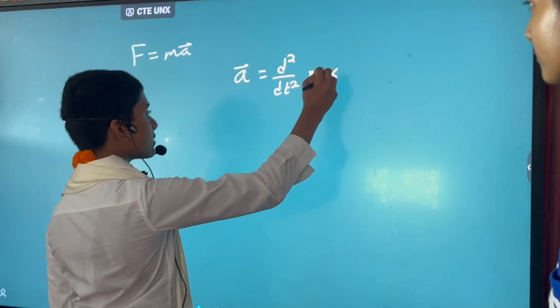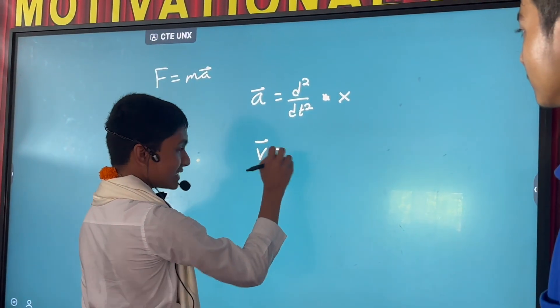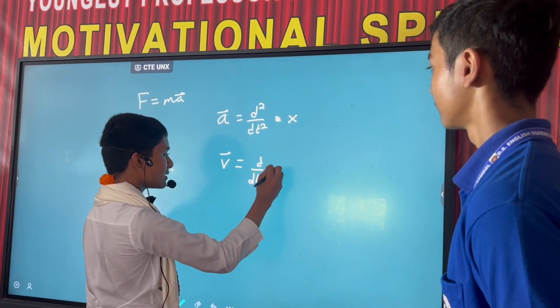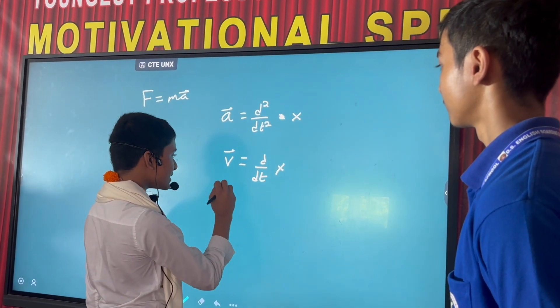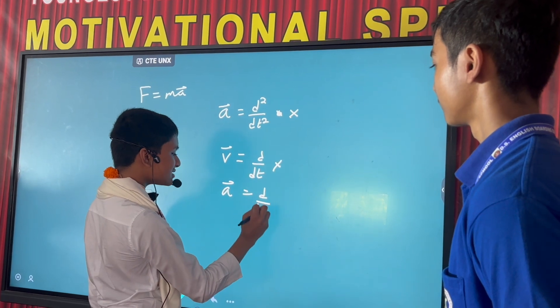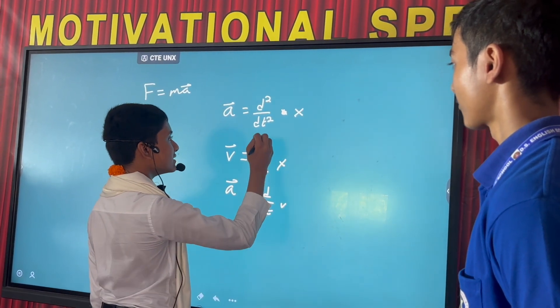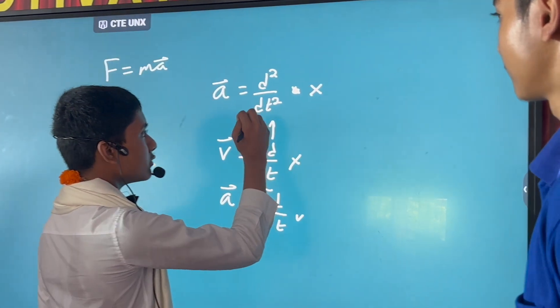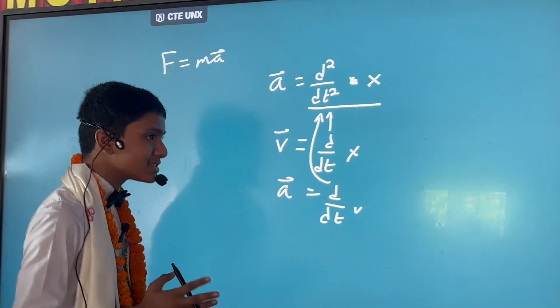What that means is that velocity is just the change in distance over time - it's the rate of change. And so acceleration is just the rate of change of velocity. And so when you combine these two together, you get d²/dt² x - so it's the second derivative with respect to time.